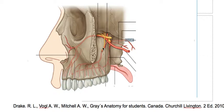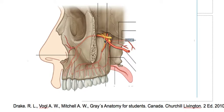This direct branch is the superior posterior alveolar artery, which gives rise to small arteries that supply the premolar and molar teeth and the maxillary sinus. It passes together with the posterior superior alveolar nerve. They both perforate the zygomatic bone through the alveolar foramen.